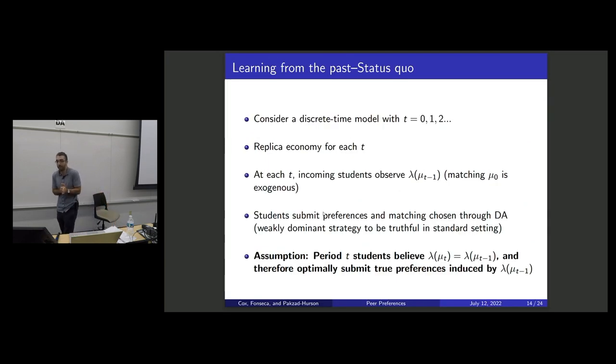And from a modeling perspective, this leads to this discrete time process. Let's just for now think of every year the market's exactly the same in terms of the programs that are offered and the distribution of student types. And each student's just going to observe the matching in the previous period, or really all we need is they just need to observe the distribution of types of students in the previous period.